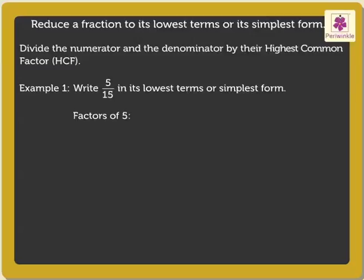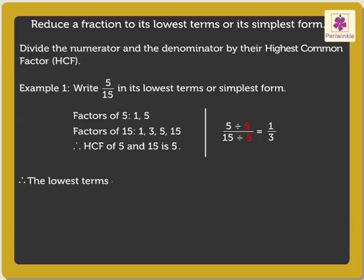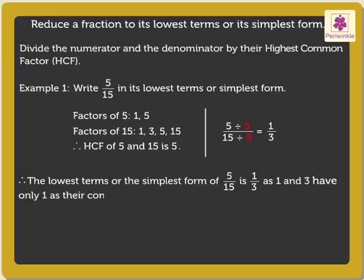Factors of 5 and 15 are 1, 3, 5, and 15. Here, the HCF of 5 and 15 is 5. As stated earlier, we will divide both the numerator, that is 5, and the denominator, that is 15, by 5. Thus, 5 divided by 5 upon 15 divided by 5 is equal to 1 upon 3. Therefore, the lowest terms or simplest form of 5 upon 15 is 1 upon 3, as 1 and 3 have only 1 as their common factor.